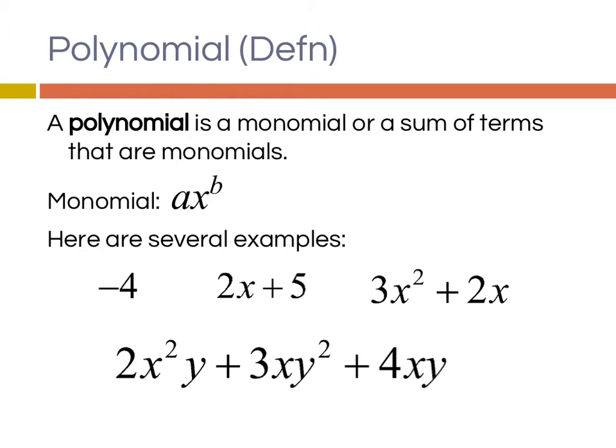So you have a few examples down here. For example, negative 4. That's a monomial, which falls into the realm of polynomials. You've got 2x plus 5. That's actually what's called a binomial. So there's a monomial and another monomial. Two monomials make a binomial. That's fun. And that also falls into the family of polynomials.